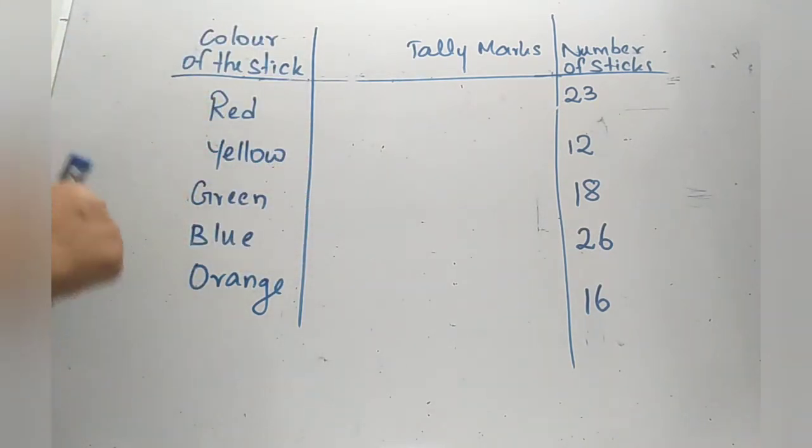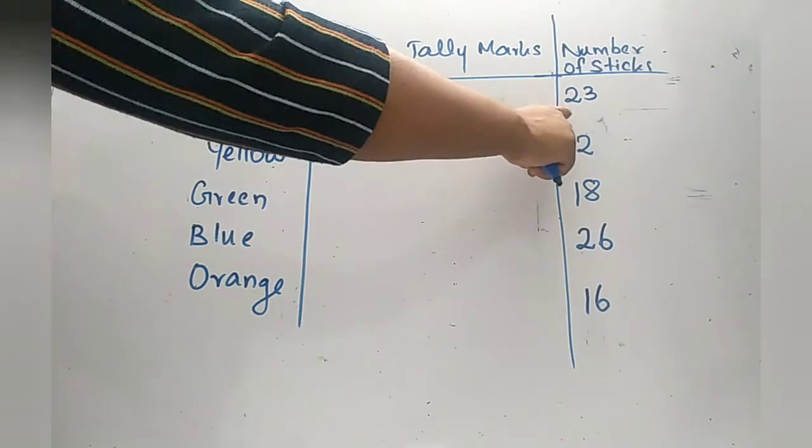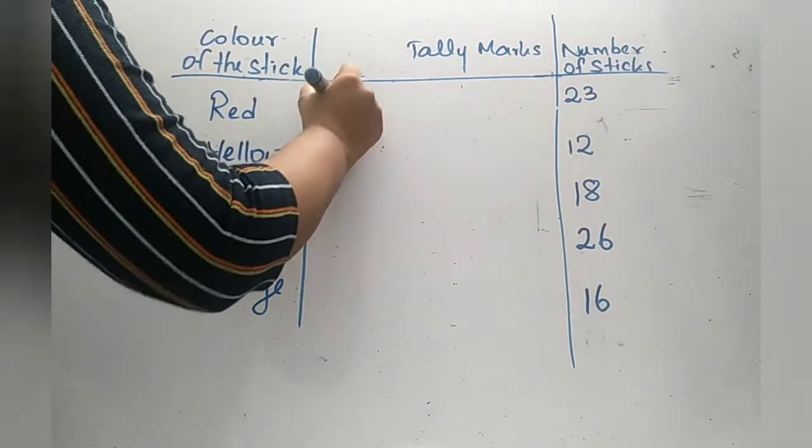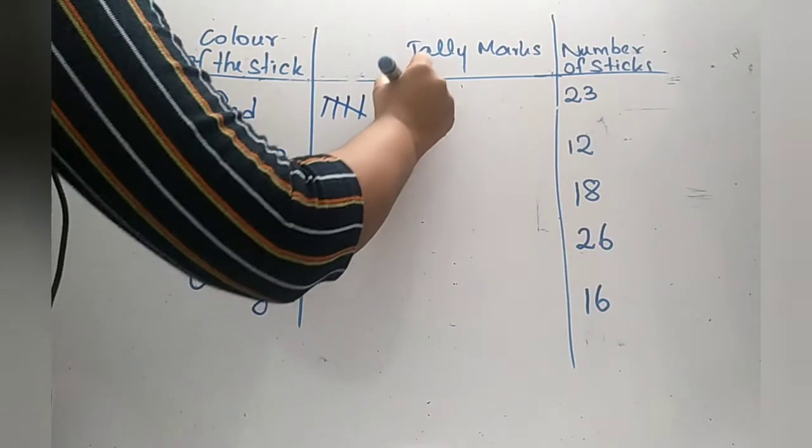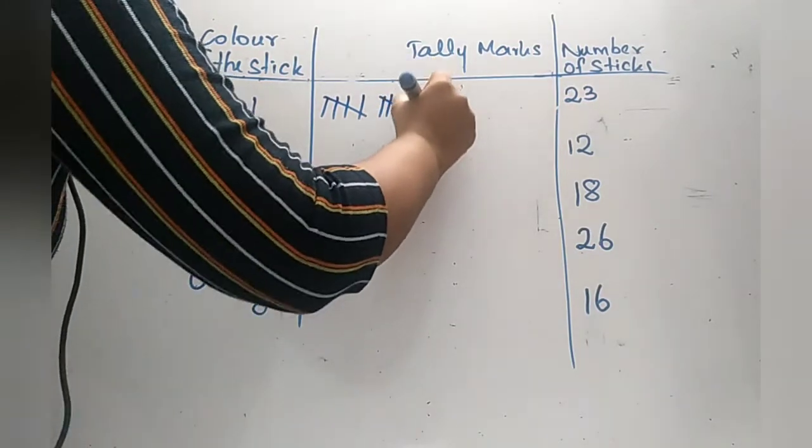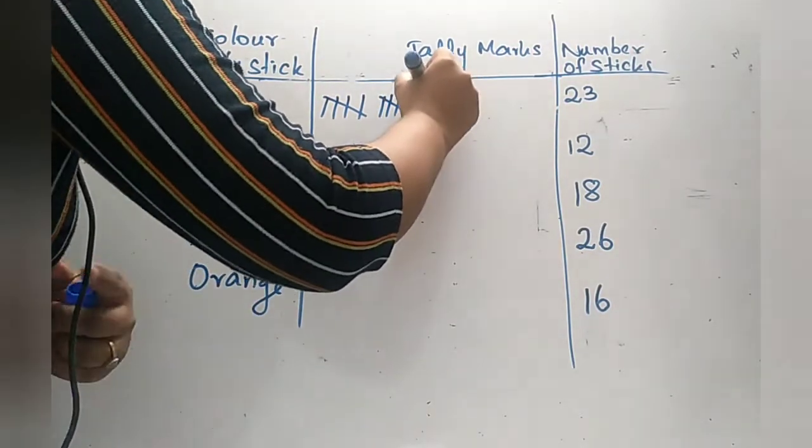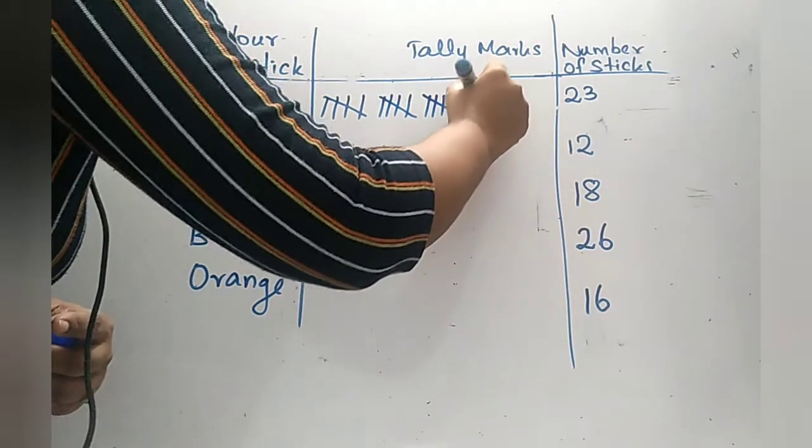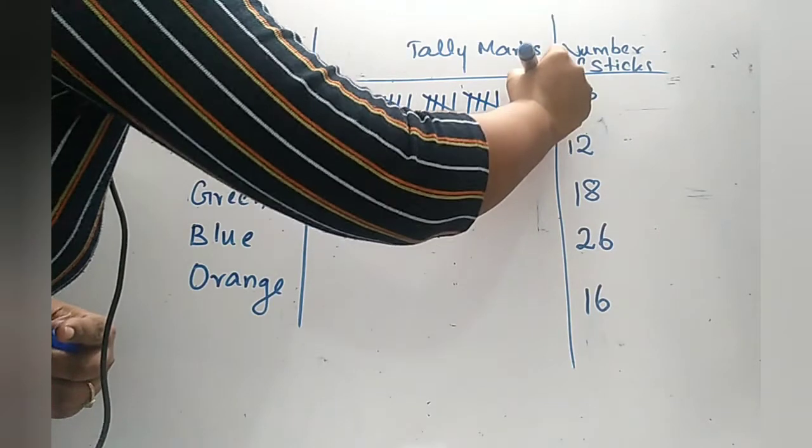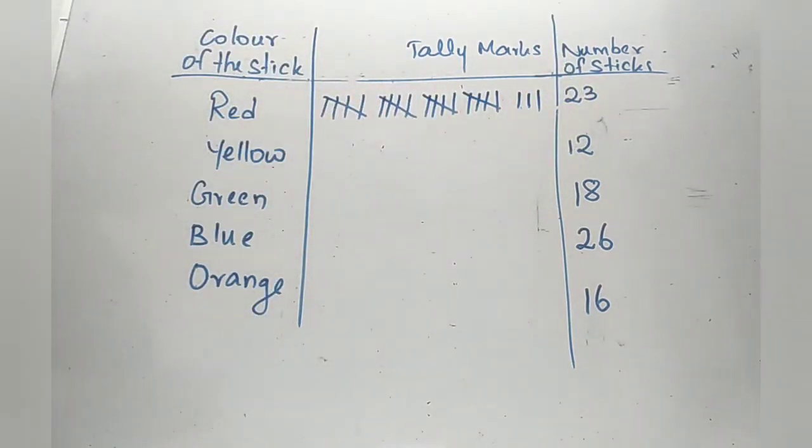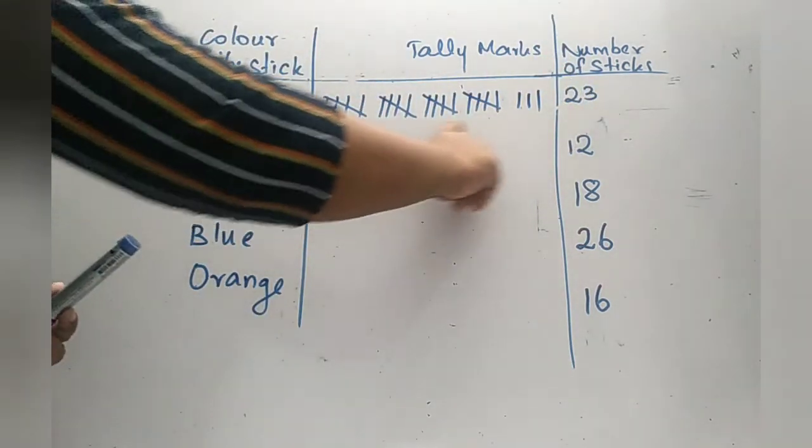As I mentioned before, one set of tally marks represent 5. Since there are 23: 5, 10, 15, 20, 1, 2, 3. Do you understand? So this represents 23.